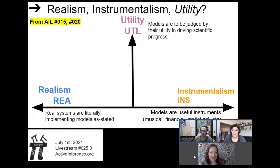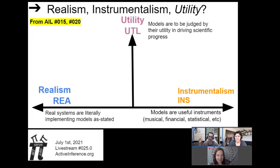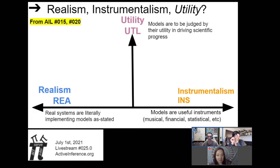In previous livestreams 15 and 20, we talked a lot about this continuum from realism to instrumentalism. Is active inference the territory itself? That's realism — we're really describing what's really there when we make an active inference model. Or instrumentalism is like active inference as a map — using it as something to capture some features of a system instrumentally, like a model. We've introduced a third vector of utility — whether it's the map or the territory, orthogonal to that is: is it useful? This describes not just where we can think about active inference existing, but also ways to evaluate different models.